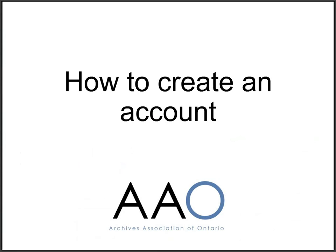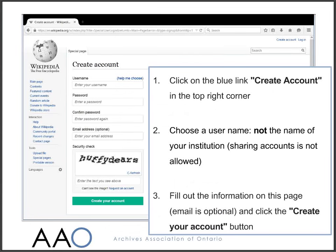Let's go through the process of creating a Wikipedia account. You don't have to have an account in order to edit Wikipedia, but there are some advantages in having one, like keeping track of your edits and monitoring changes to pages that you're interested in. Creating an account is easy — you could even do it now while you're watching this video. From any Wikipedia page, just click on the Create Account link towards the top right, fill in the form, choose a unique username, a password, and fill in the security check text, then click Create Your Account and you're ready to start editing.